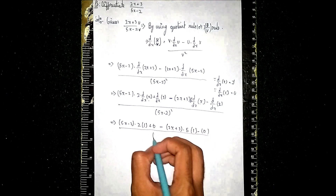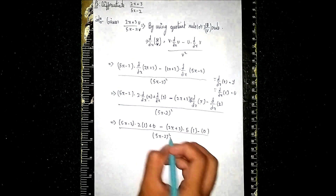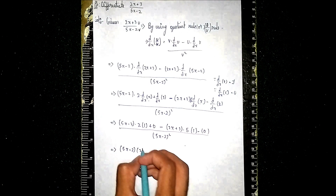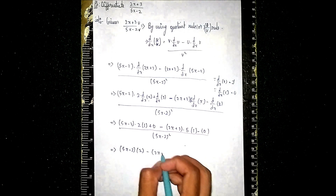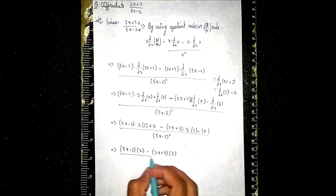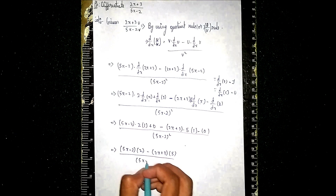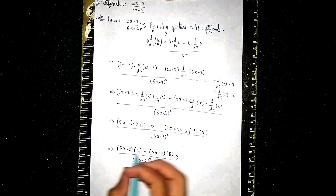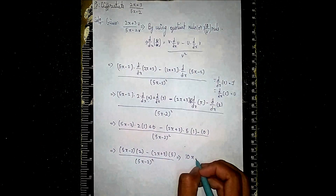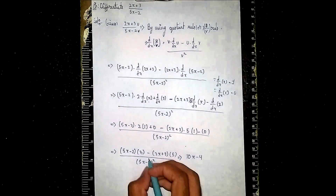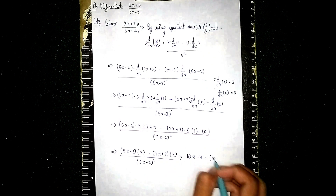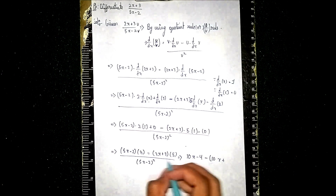After applying those, we get: (5x - 2) into 2, minus (2x + 3) into 5, all divided by (5x - 2) whole squared. Expanding: 5x times 2 is 10x, minus 2 times 2 is 4, then minus the bracket 2x times 5 is 10x, plus 3 times 5 is 15.